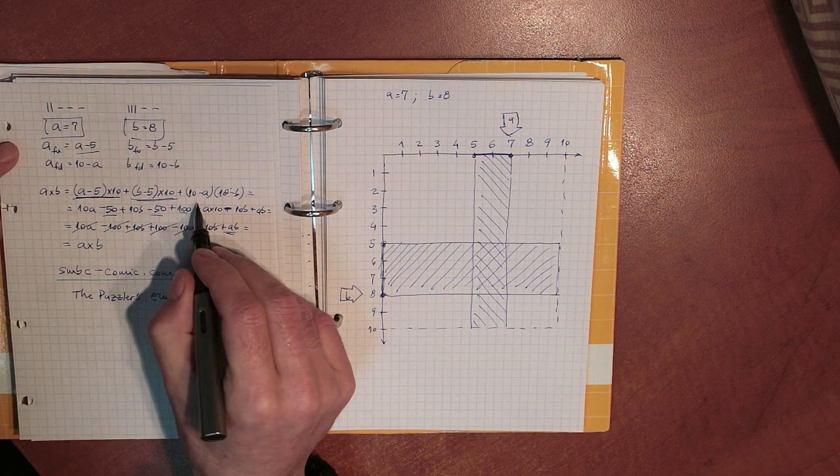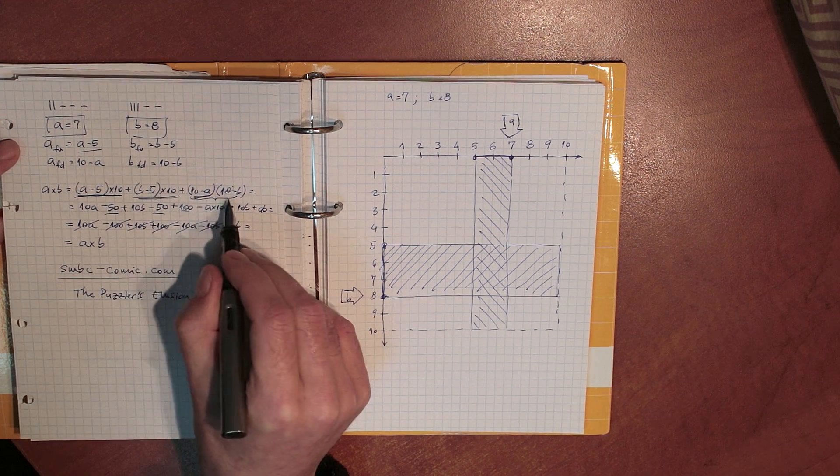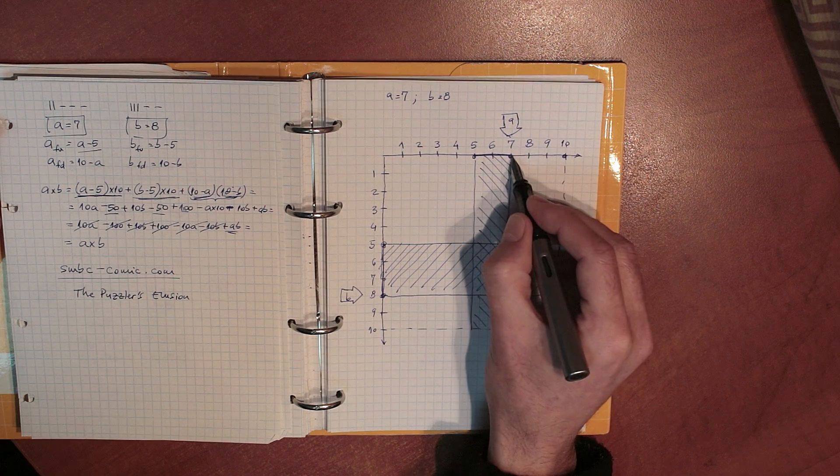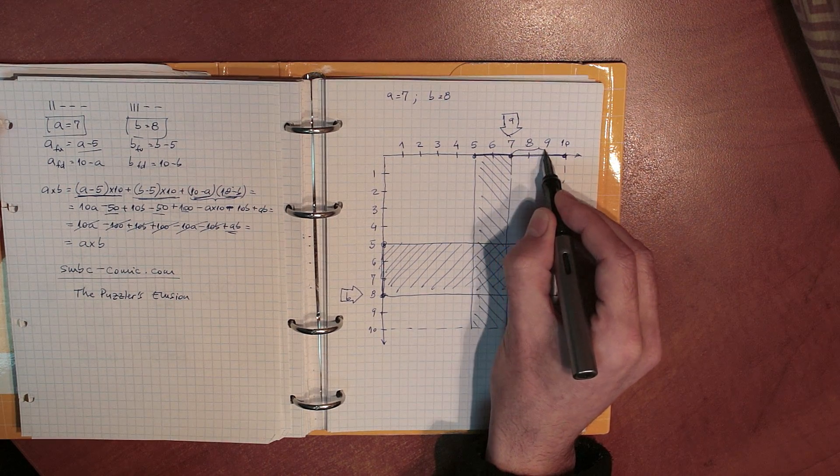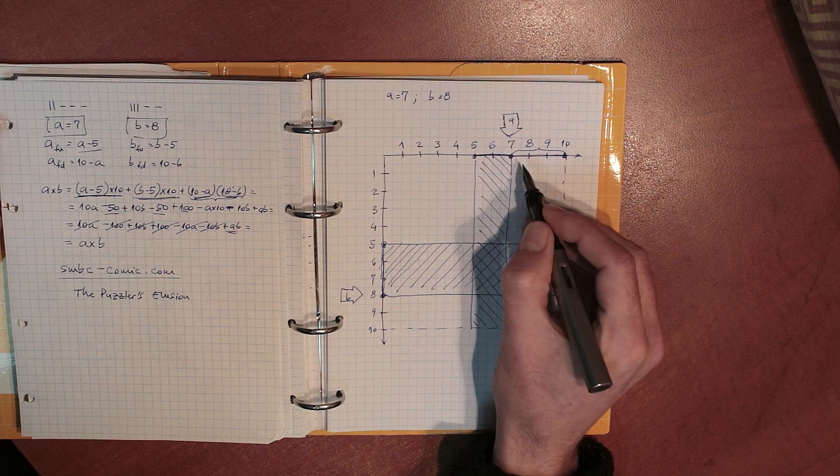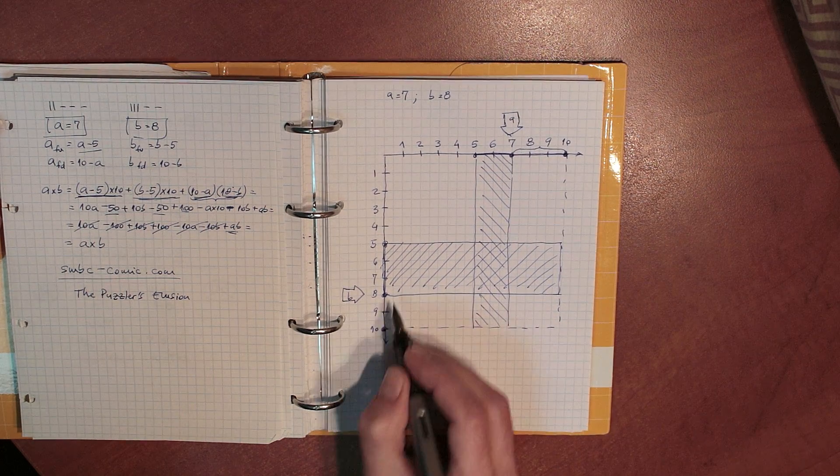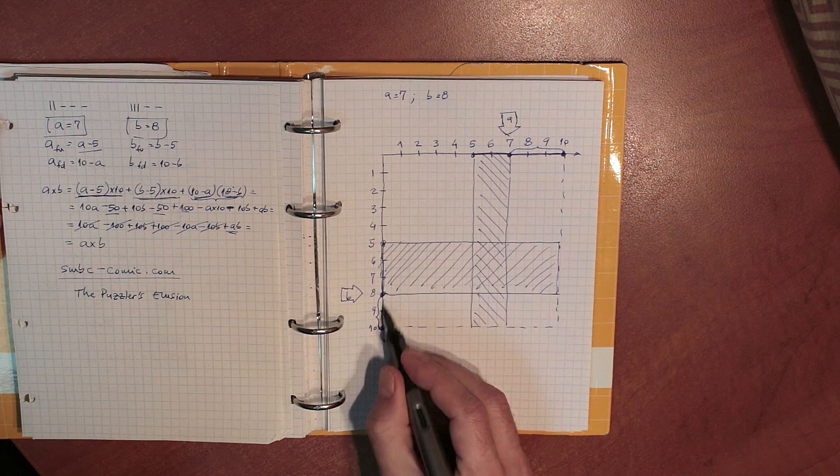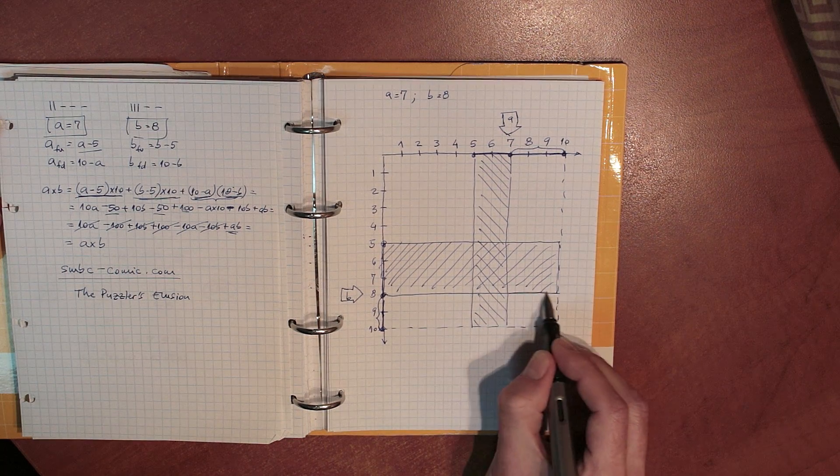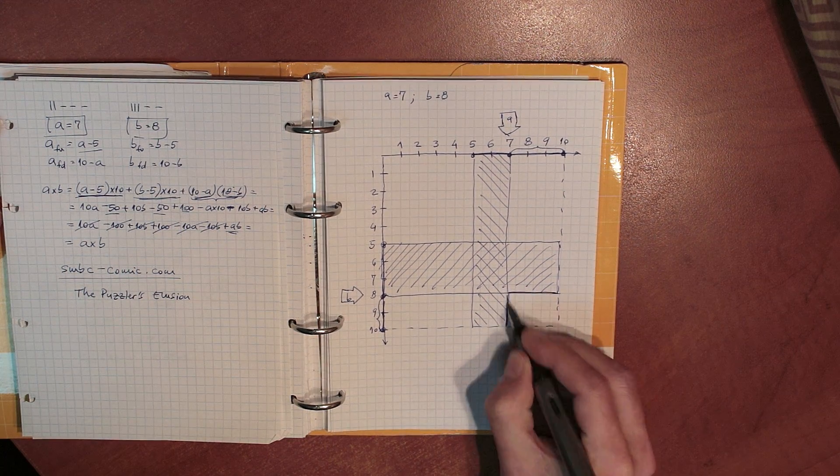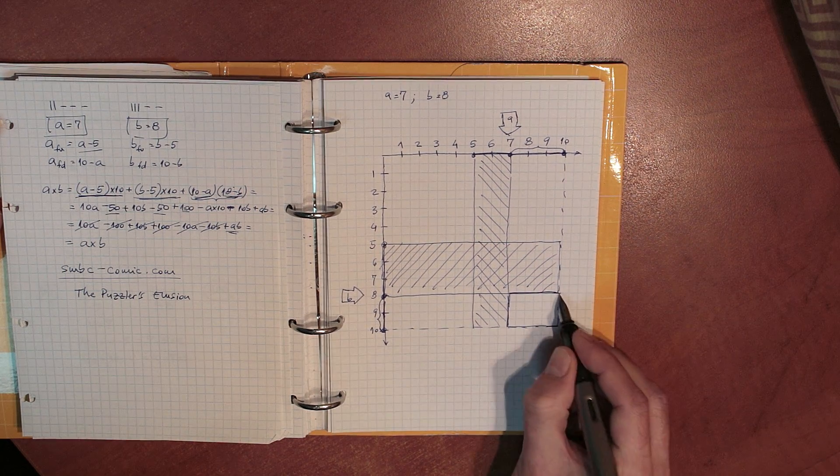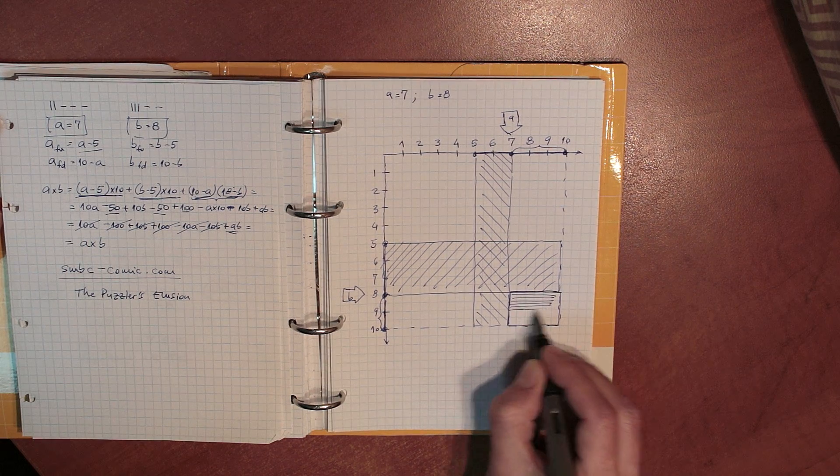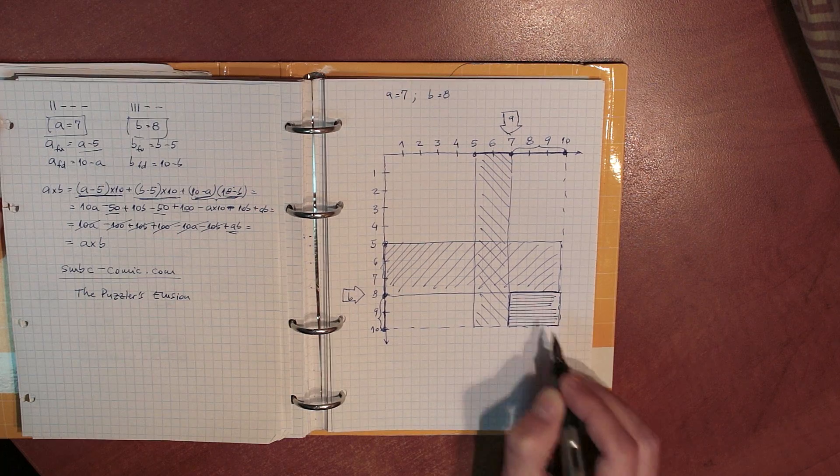Now, I'm left with this guy here. 10 minus A times 10 minus B. Well, 10 minus A is this segment here. This guy here. This is 10 minus A, right? And 10 minus B is this segment here. This is 10 minus B. So, this times this is exactly this times this, right? So, it's this rectangle right here. This is the number of lowered fingers on my two hands multiplied together. Now, let's take a look because you remember I said we are going to represent the example 7, A equals 7 and B equals 8, just because I have to represent something in this diagram.